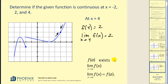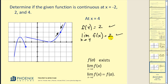We verify that f of a exists and that the limit exists. We also need to make sure we can find this limit by doing direct substitution — when x is 4. Notice that f of 4 is equal to 2 and the limit is also equal to 2. Therefore this confirms that the function is continuous at x equals 4.